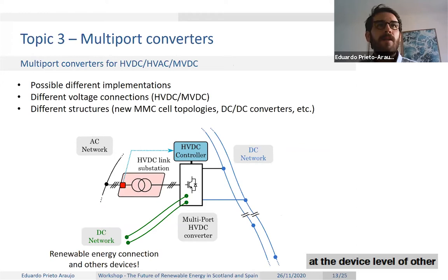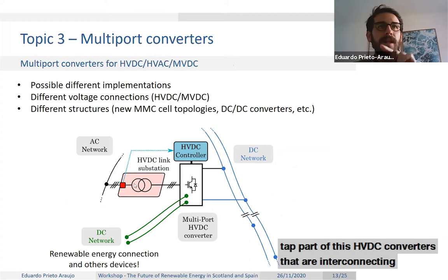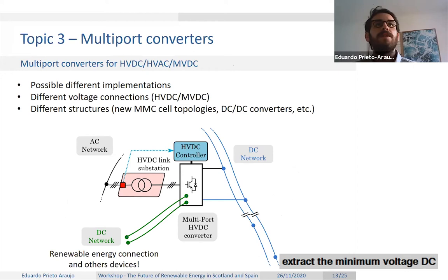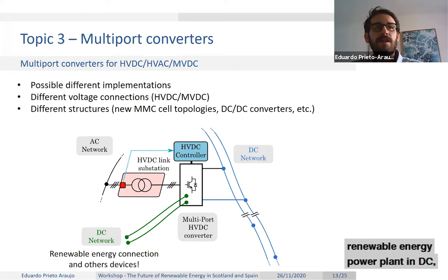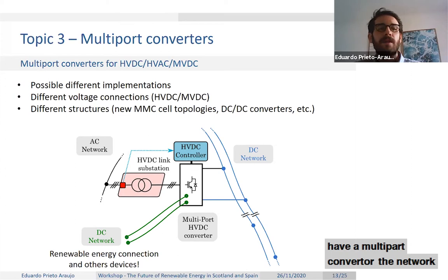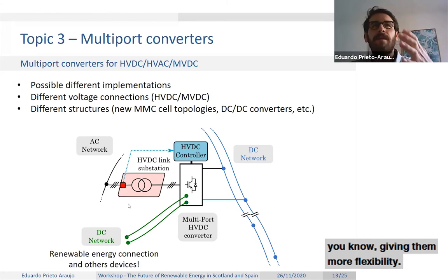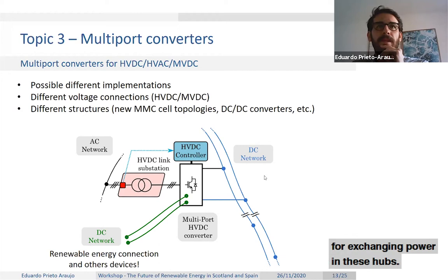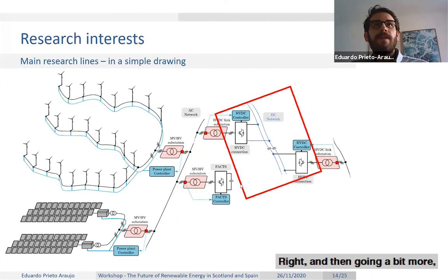We have also started a collaboration with RTE looking at multi-port converters — tapping part of HVDC converters that interconnect HV AC and HV DC networks to extract a medium-voltage DC connection. This would enable us to interconnect renewable energy power plants in DC, or hydrogen electrolyzers, giving the network more flexibility and increased power exchange capabilities in these energy hubs.